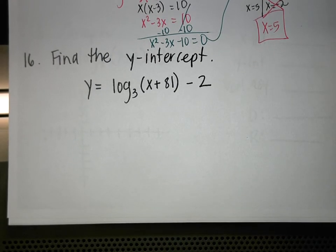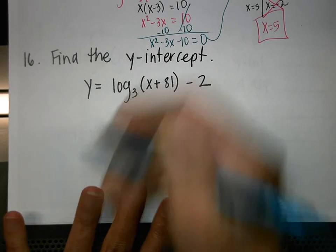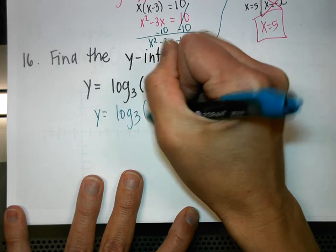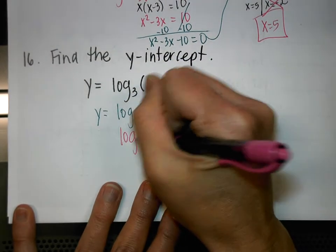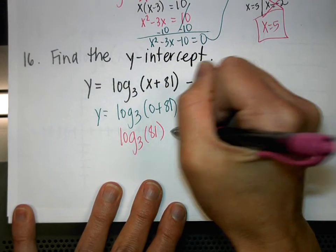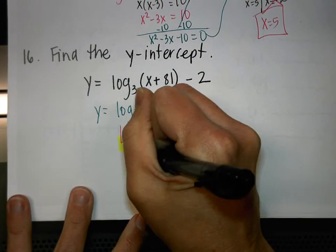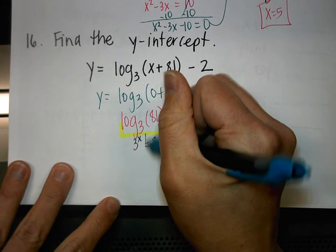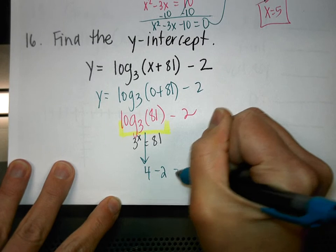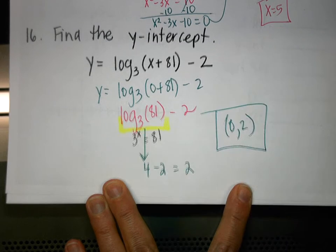Number 16: They're asking for the y-intercept. Plug in 0 for X: y equals log base 3 of (0 + 81) minus 2, which is log base 3 of 81 minus 2. 3 to what power equals 81? The answer is 4. So 4 minus 2 equals 2, and the y-intercept is at (0, 2).